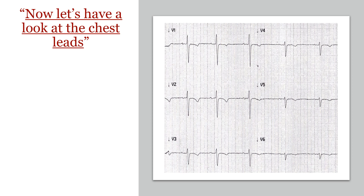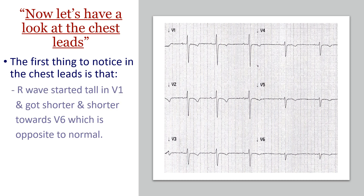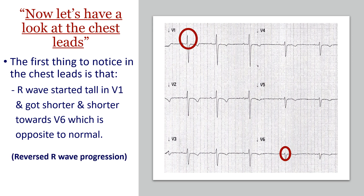So let's look at the chest leads in our case and see if they were normal. From V1 to V6 there are a few abnormalities. The first is R wave progression — the R wave started tall in V1 and got shorter and shorter all the way down to V6, which is clearly abnormal. Normally I would expect a small R wave in V1 that gets bigger toward V6, but this is the exact opposite. This is reversed R wave progression.